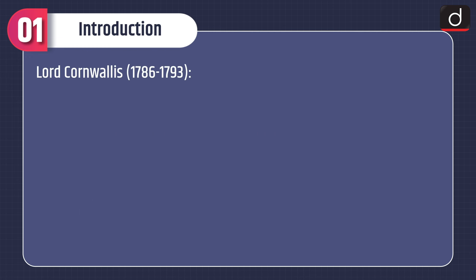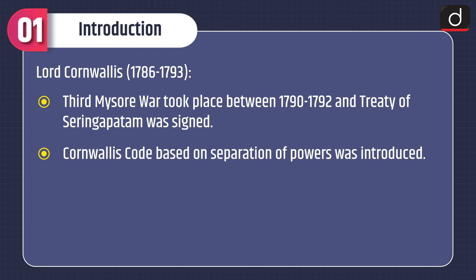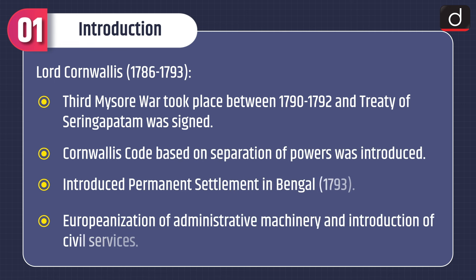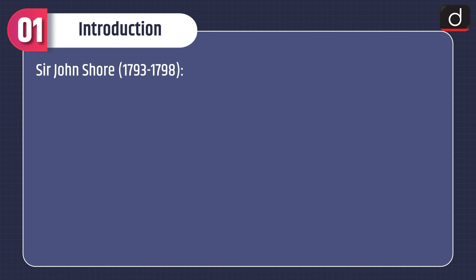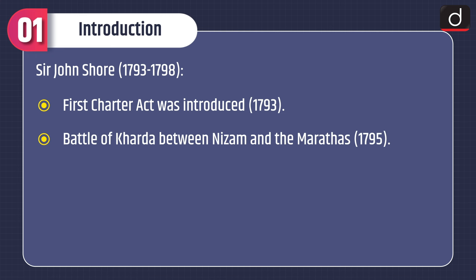Lord Cornwallis, 1786–1793: the Third Mysore War took place between 1790 and 1792 and the Treaty of Seringapatam was signed. Cornwallis's code based on separation of powers was introduced. Permanent settlement in Bengal was introduced in 1793. Europeanisation of administrative machinery and introduction of civil services also took place. Sir John Shore, 1793–1798: the First Charter Act was introduced in 1793 and the Battle of Kharda between the Nizam and the Marathas took place in 1795.